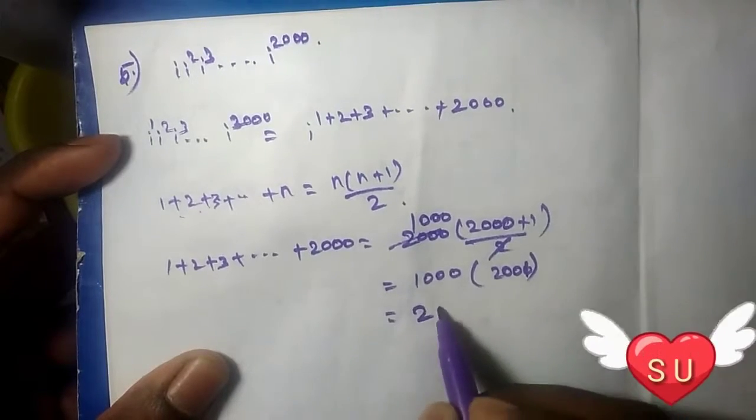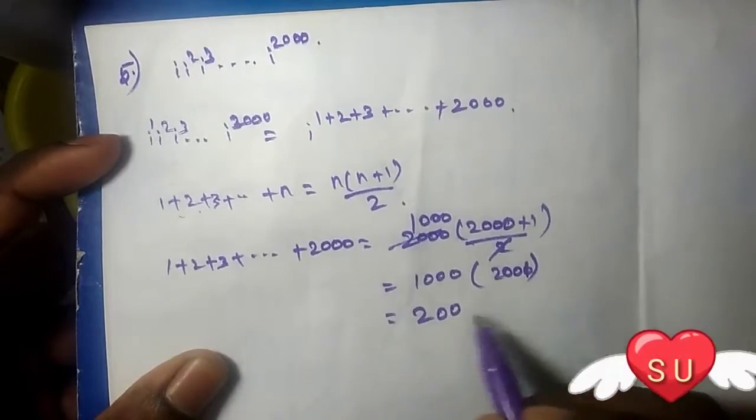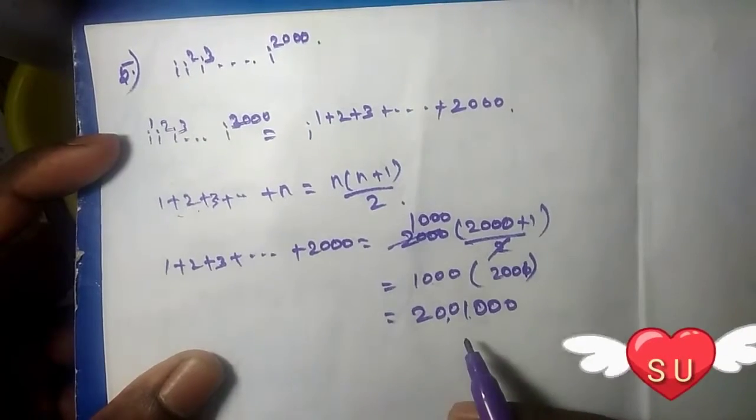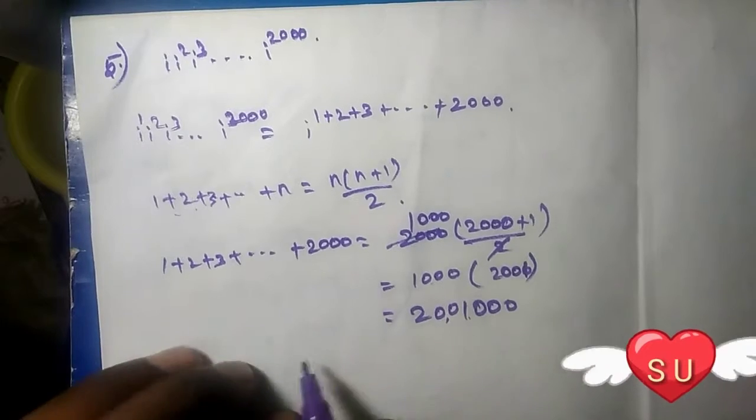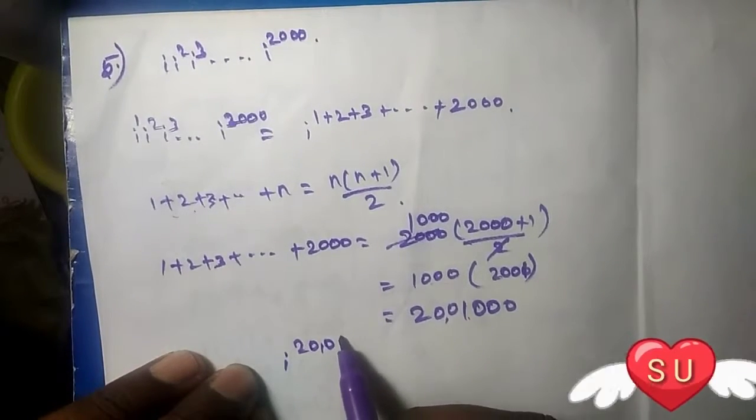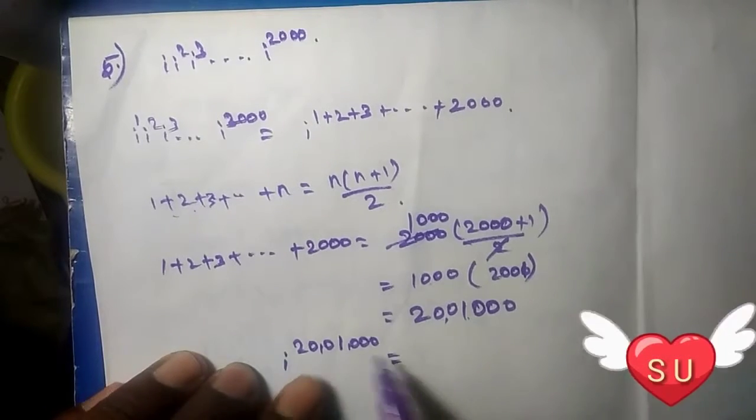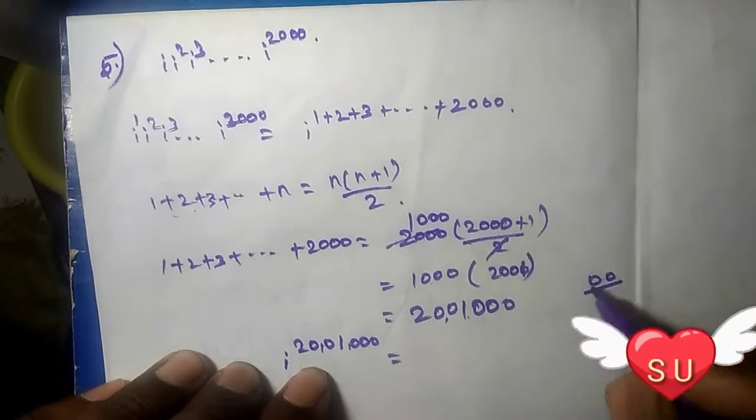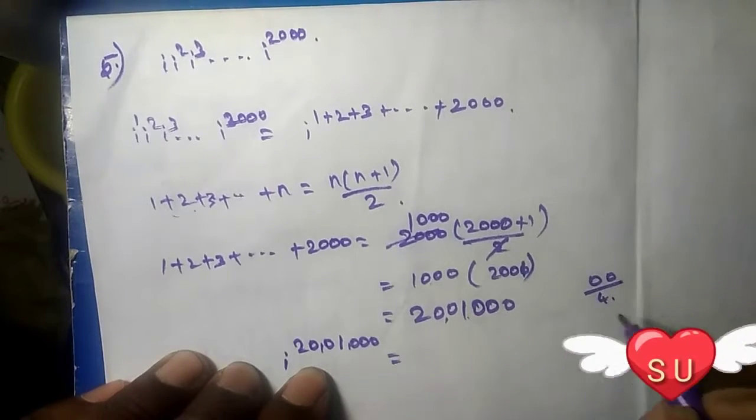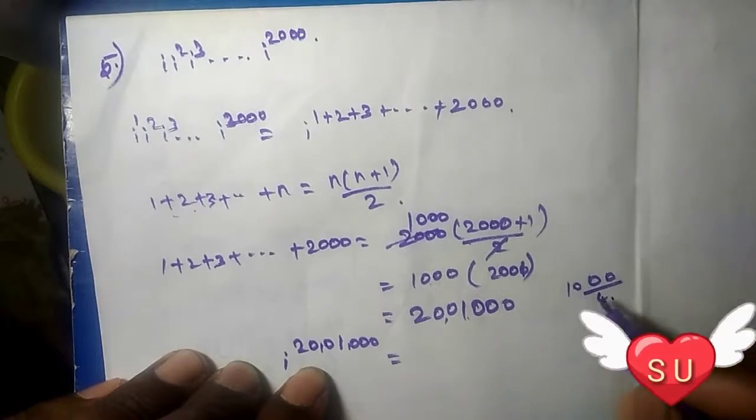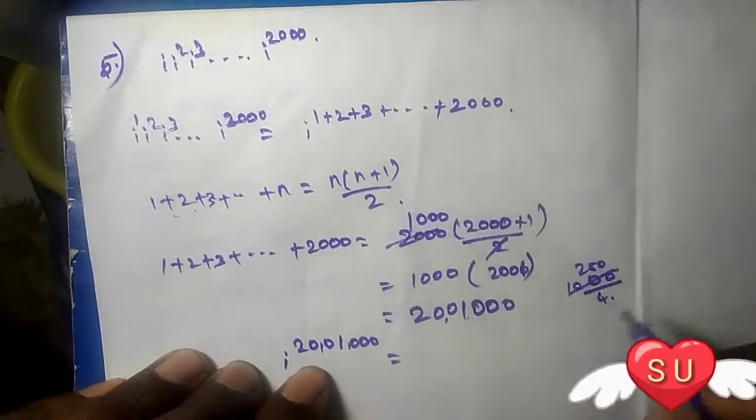So thousand into two thousand one equals 2,001,000, which is 20 lakhs. So i power 20 lakhs. When you divide by four, look at the last digits.